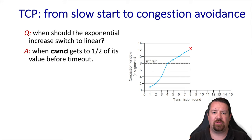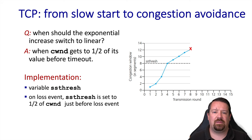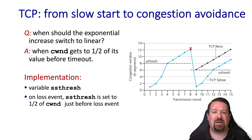Plotting the congestion window over time, we can see it doubling with each round trip time and then switching to the additive increase congestion avoidance phase. This transition happens when the congestion window reaches the SS threshold — the slow start threshold. In the event of a loss, the SS threshold is reduced to half the congestion window from before the loss event. TCP Tahoe reduces its congestion window to one MSS and goes back through slow start, whereas TCP Reno drops to the SS threshold and increases linearly from there.